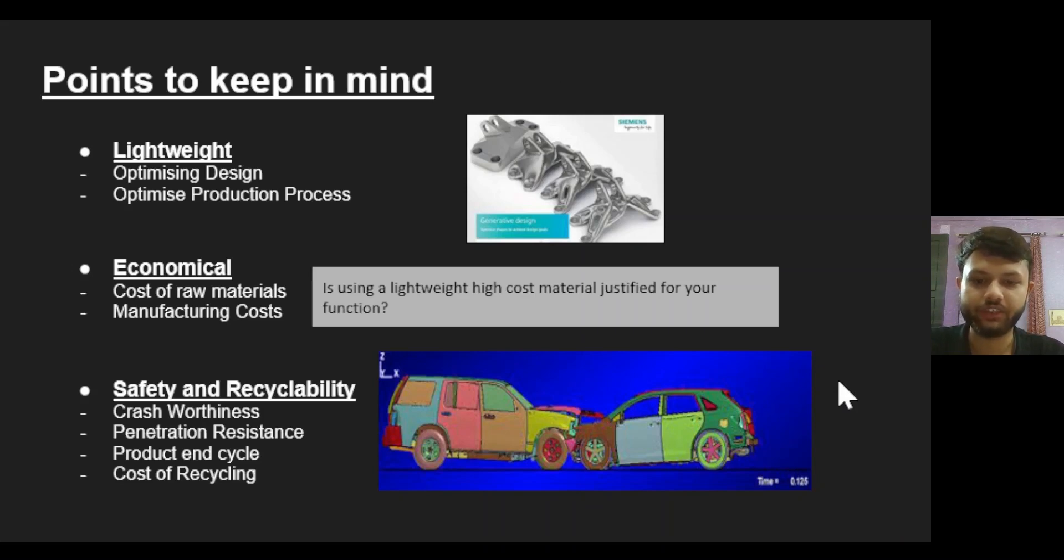Points to keep in mind before designing your chassis: The chassis should be lightweight. You do not wish to unnecessarily increase the weight, so what we do is we use the concept of generative design. In generative design we remove the material using iterations without actually compromising the strength of the component. For example, look at this image. This was our original component and then we use multiple iterations to remove the material and this is what it becomes at the end. Now there is a question: is using a lightweight, high-cost material justified for your function? Obviously you will not start to use the carbon fiber for your FSC vehicle. You need to look at the manufacturing cost and also the raw material for it. In addition to this, the chassis you are building should be safe. It should be able to pass all the tests.